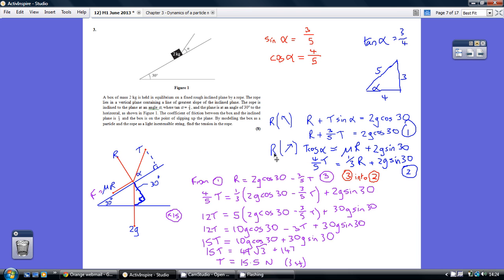Secondly, let's resolve diagonally up the slope, so T cos alpha, this force here, equals the friction plus the appropriate element of the weight, this bit here, 2G sin 30. So that's our second equation, once we've actually realised that cos alpha is 4 over 5.